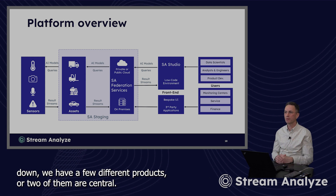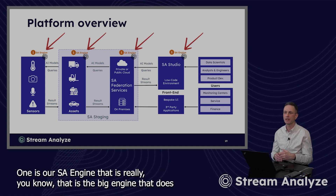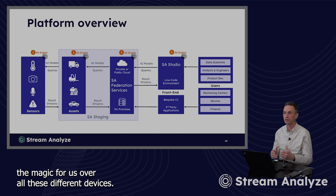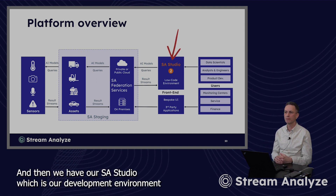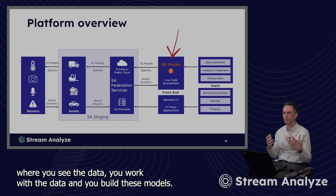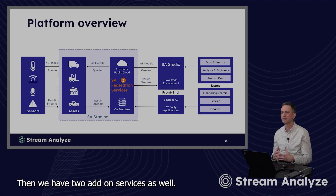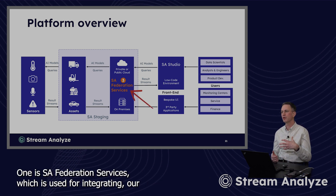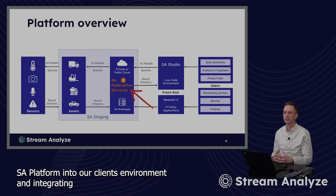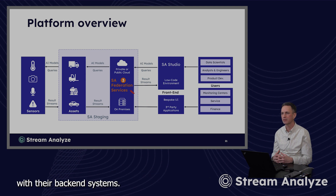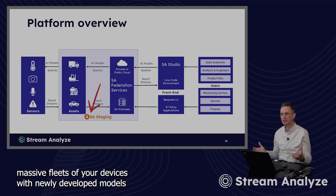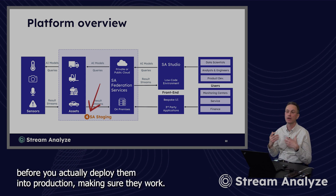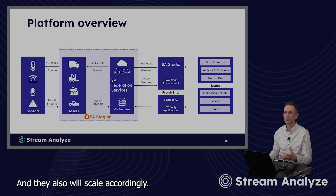And if we break this down, we have a few different products where two of them are central. One is our SA Engine. That is the big engine that does the magic for us over all these different devices — this is what we install either on the sensor or on the asset. And then we have our SA Studio, which is our development environment where you see the data, you work with the data and you build these models. Then we have two add-on services as well. One is SA Federation Services, which is used for integrating our SA platform into our client's environment and integrating with their backend systems. And then finally, SA Staging is used for simulating massive fleets of your devices with newly developed models before you actually deploy them into production, making sure they work and they will also scale accordingly.